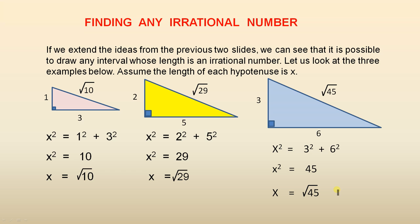Assume the length of each hypotenuse is x. Now if we start off with a right angle triangle, three units for the base and one unit for the height. If we use Pythagoras' theorem, which is very straightforward, remember x is the length of the hypotenuse. So x squared equals one squared plus three squared. x squared equals ten. So x is the square root of ten. So this hypotenuse is the square root of ten. And that's how you draw that length.